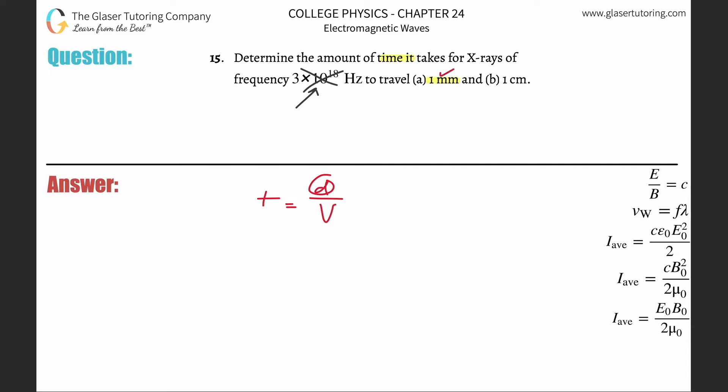The distance is in millimeters, but we need that in meters. So just take 1 and multiply it by 10 to the minus 3. Then we need to know velocity.